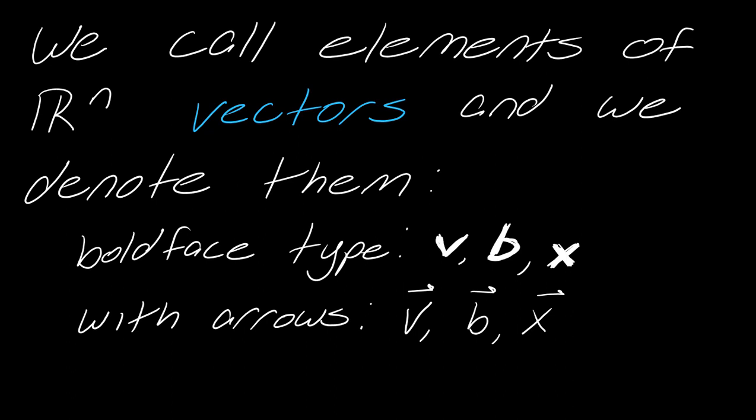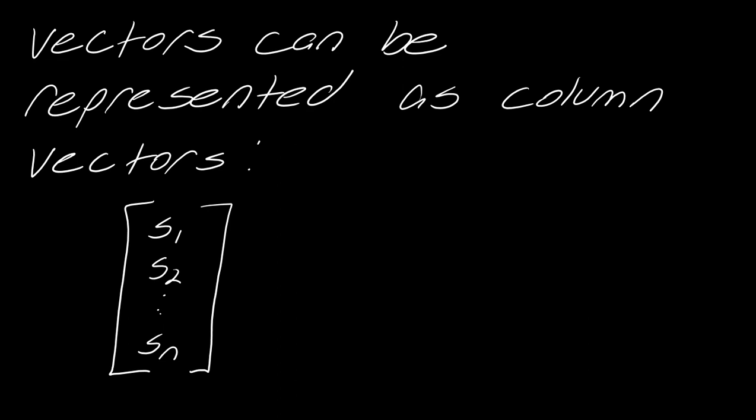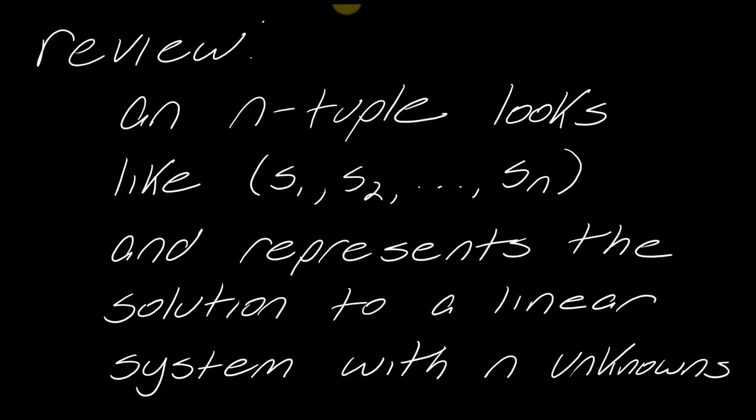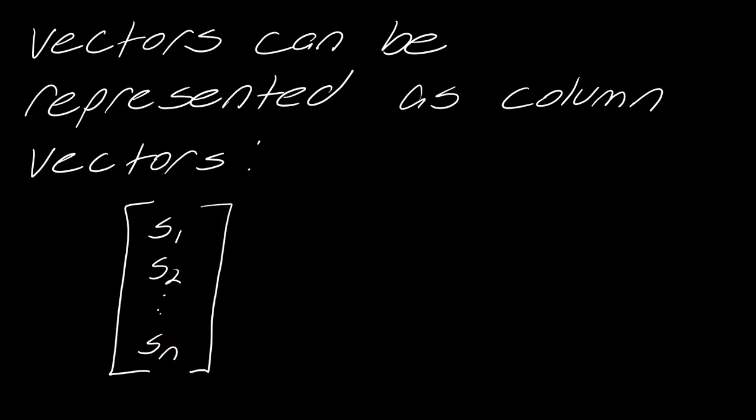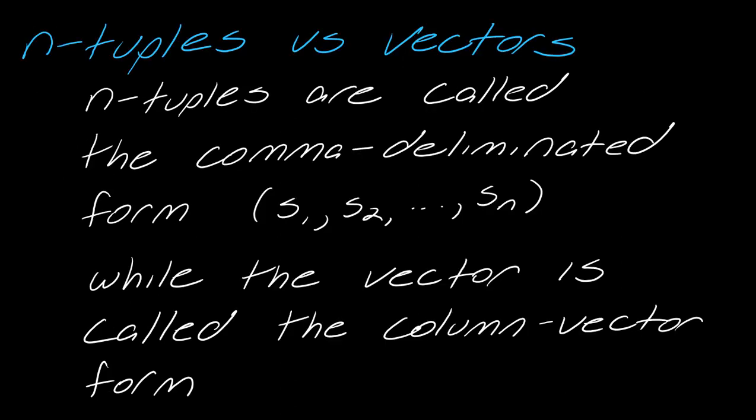So we call the elements of Rn vectors, and there's a couple of ways that we can denote them. So you'll notice in books, they usually use boldface type. This would be really inconvenient to do by hand. So if you are writing by hand, a lot of times you just use arrows like this. And so we also have that vectors can be represented specifically as column vectors. So I can have an n-tuple, which looks like this, or I could rewrite the n-tuple as a column vector as shown here. So n-tuples versus vectors. So a lot of times we say that n-tuples are called the comma delimited form, while a vector is called the column vector form. They are the same thing. They're just two different forms of the same thing. But where we're going, we're interested in talking more about what we think of things as vectors, although we will kind of switch back and forth between the two, just depending on what we're doing.